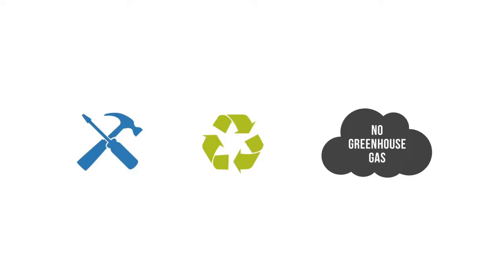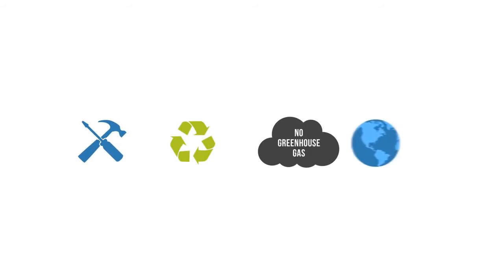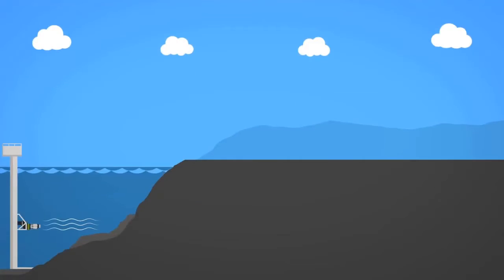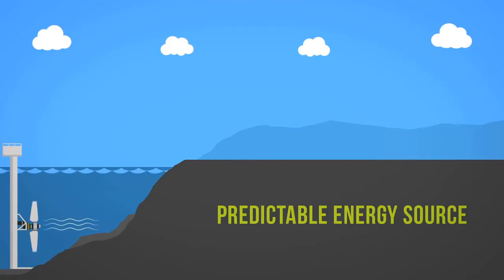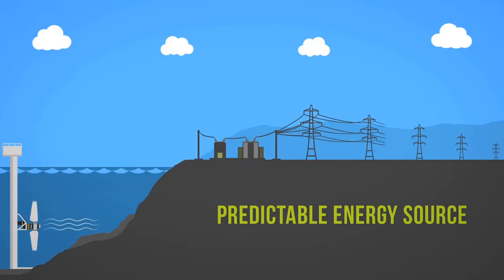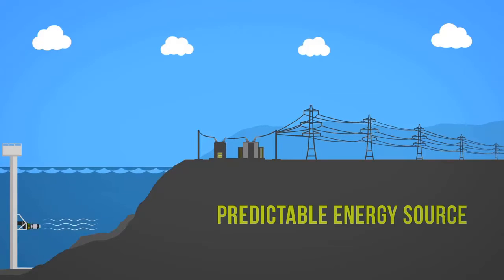Tidal power is easy to install and renewable, having no direct greenhouse gas emissions and a low environmental impact. Because the ocean's tidal patterns are well understood, tidal energy is a very predictable energy source, making it highly attractive for electrical grid management. This sets it apart from other renewables that can be more unpredictable.